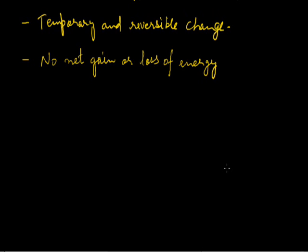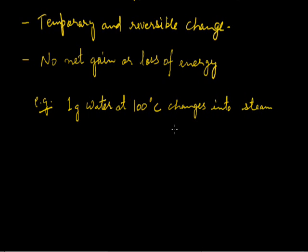Just for example, if we take 1 gram of water at 100 degrees Celsius on changing into steam needs 2260 joules of heat energy. Now, if 1 gram of steam at 100 degrees Celsius is being changed into water at 100 degrees Celsius, it releases the same amount of energy, that is 2260 joules. So, there is no net change in the energy. The change is zero.